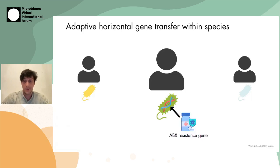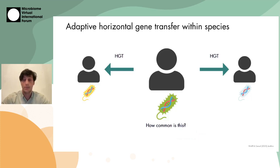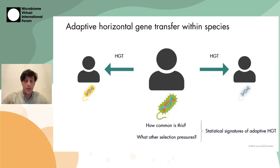For instance, famously, we have the case of antibiotic resistance. Antibiotic resistance genes arise within some host and then spread via horizontal gene transfer to other hosts. We empirically know this happens, but we don't really know outside of the context of antibiotic resistance how common this is, nor do we know what other kinds of genes may be spreading in a similar manner. So in order to answer these questions, what we really need to do is identify statistical signatures of adaptive horizontal gene transfer.